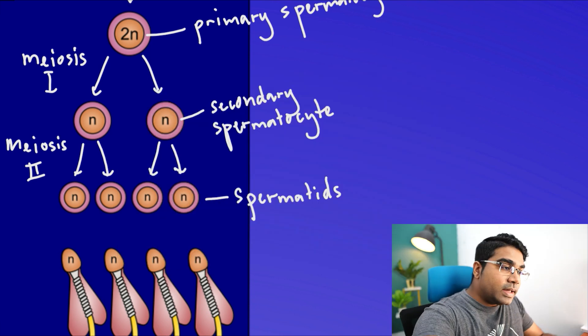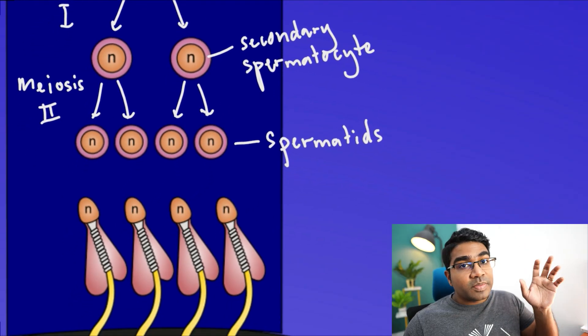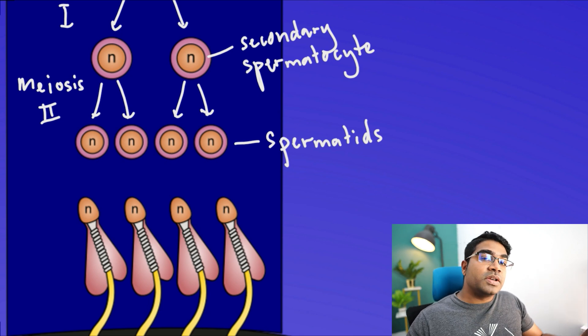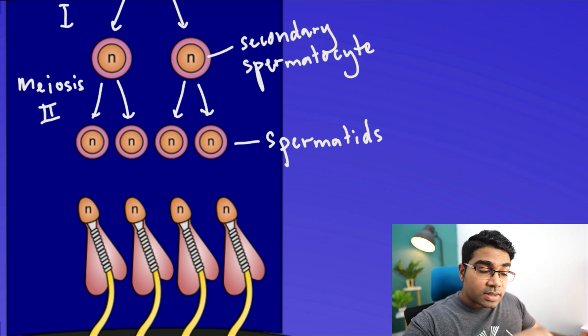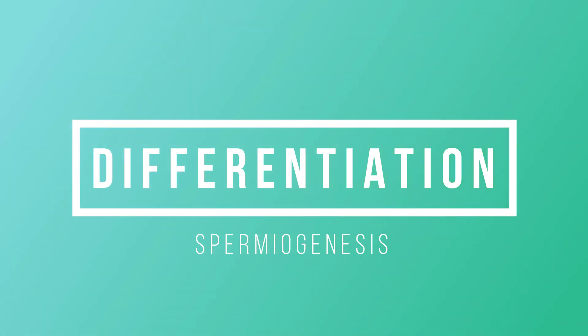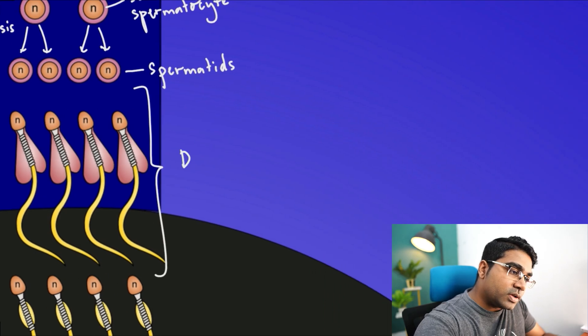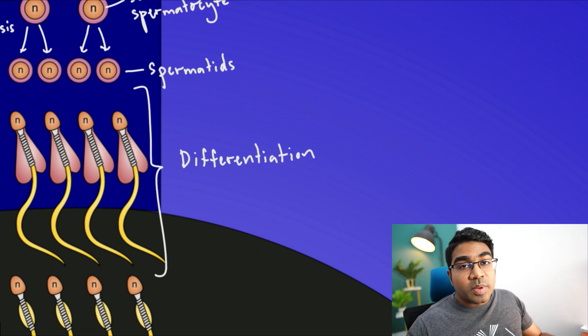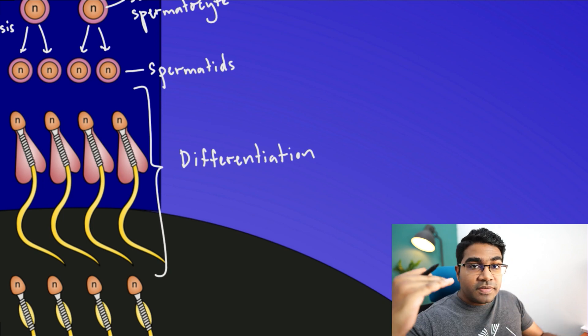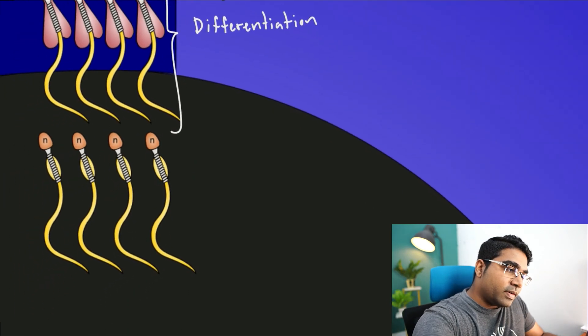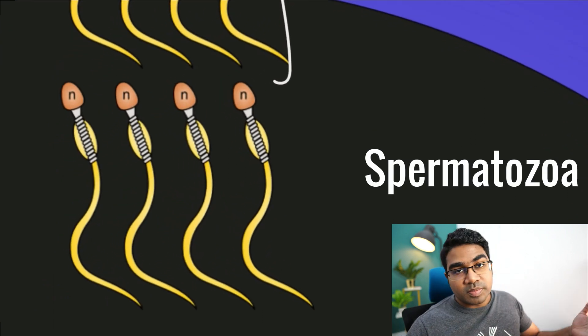Spermatids are immature sperm cells. They have not developed the special characteristics that allow them to perform fertilization. The spermatids undergo a process of differentiation known as spermiogenesis. We are not going to look at spermiogenesis in this video. After differentiation is completed, we finally have spermatozoa or sperm cells.